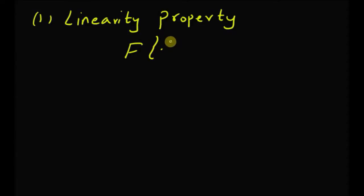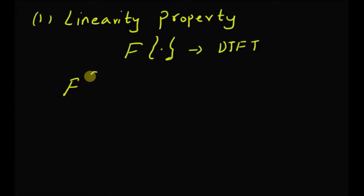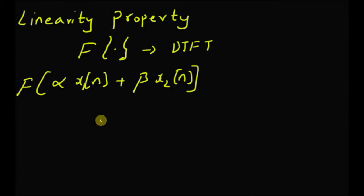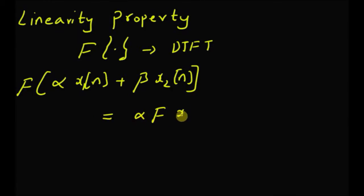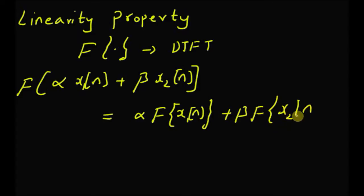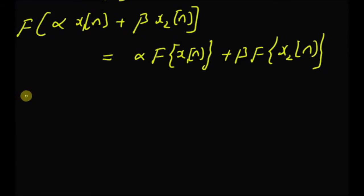Assuming that F dot denotes a DTFT, the linearity property states that the DTFT of a linear combination alpha x1 of n plus beta x2 of n is equal to alpha times the DTFT of the first signal, plus beta times the DTFT of the second signal x2 of n. That means when you apply DTFT on a linear combination, the resulting DTFT is the same as the linear combination of the DTFTs of the separate individual signals.